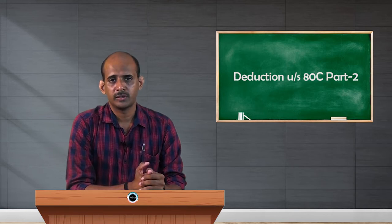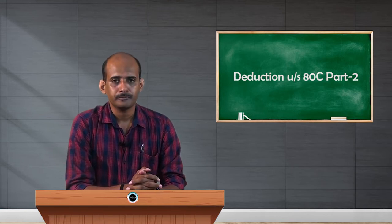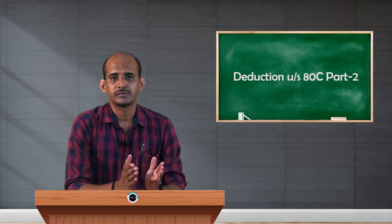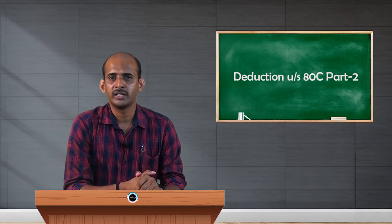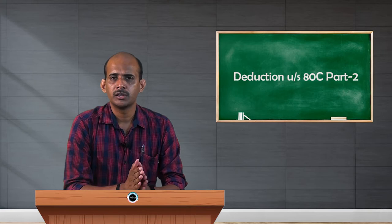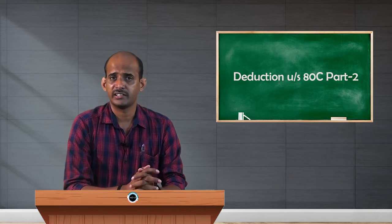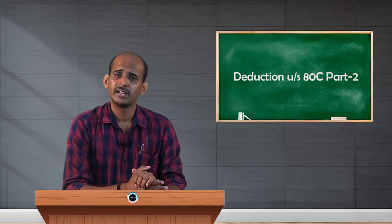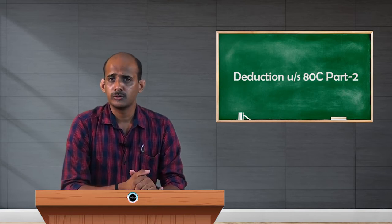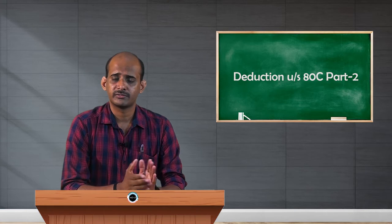The points which I am going to cover now, one by one, the first one is any payment made towards the cost of purchase or construction of residential house property. Individuals will have the responsibility or commitment of building their own house properties. When they want to construct or purchase a residential house property for their family members, they will have to incur expenditures. They will have to take a loan, it may be a bank loan or any loan from other financial institutions.